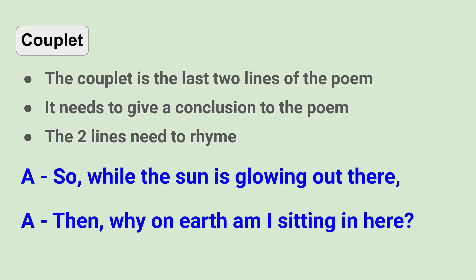Now let's move from the first stanza to the very end — the last two lines, called the couplet. The couplet has some specific rules: it's the last two lines of the poem, it needs to give a conclusion, and both lines must rhyme with each other. Both lines are in blue, both labeled A, so they rhyme with each other. My example: 'So while the sun is glowing out there, then why on earth am I sitting in here?' That's my conclusion for the summertime sonnet — ten syllables in each line, and both lines rhyme.